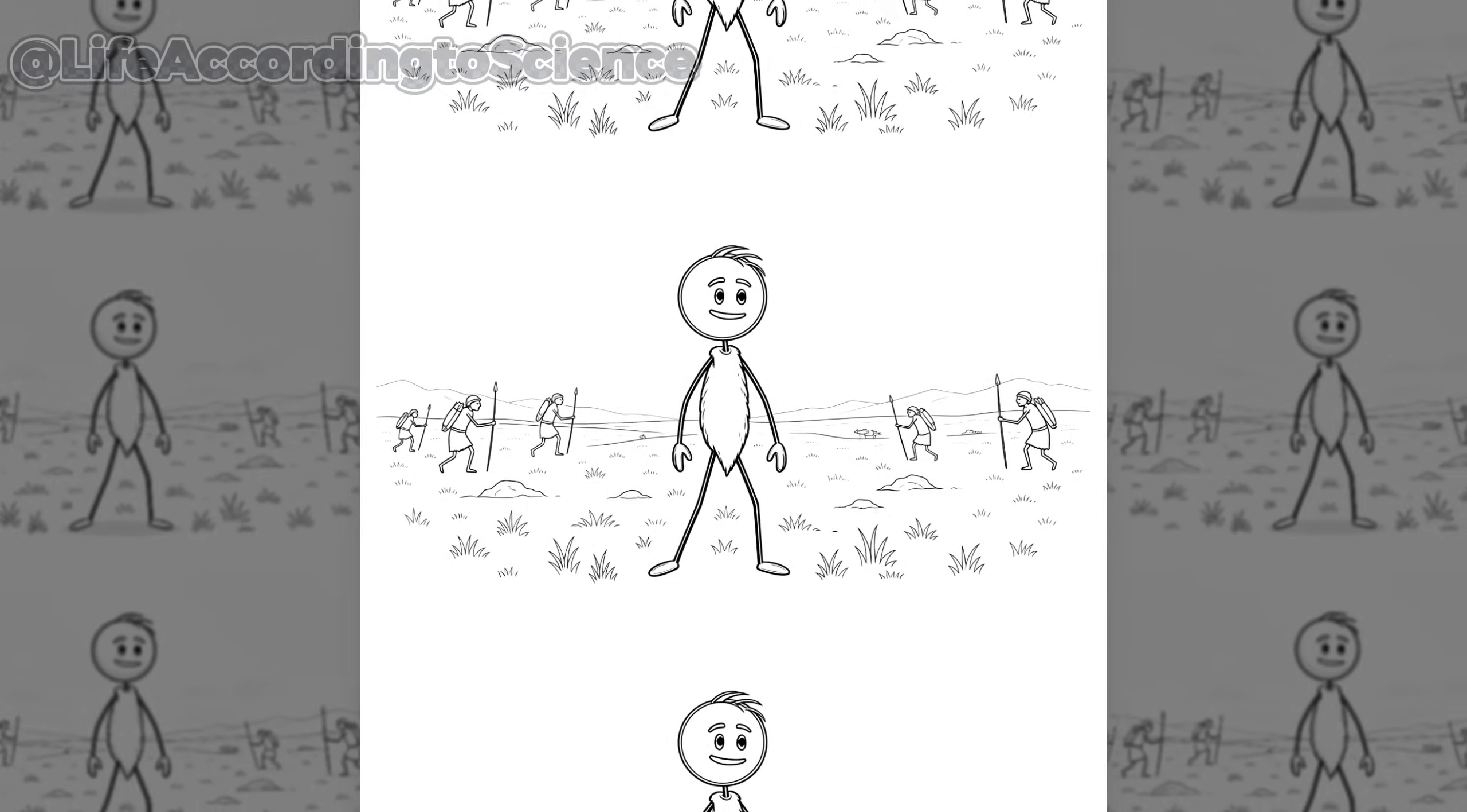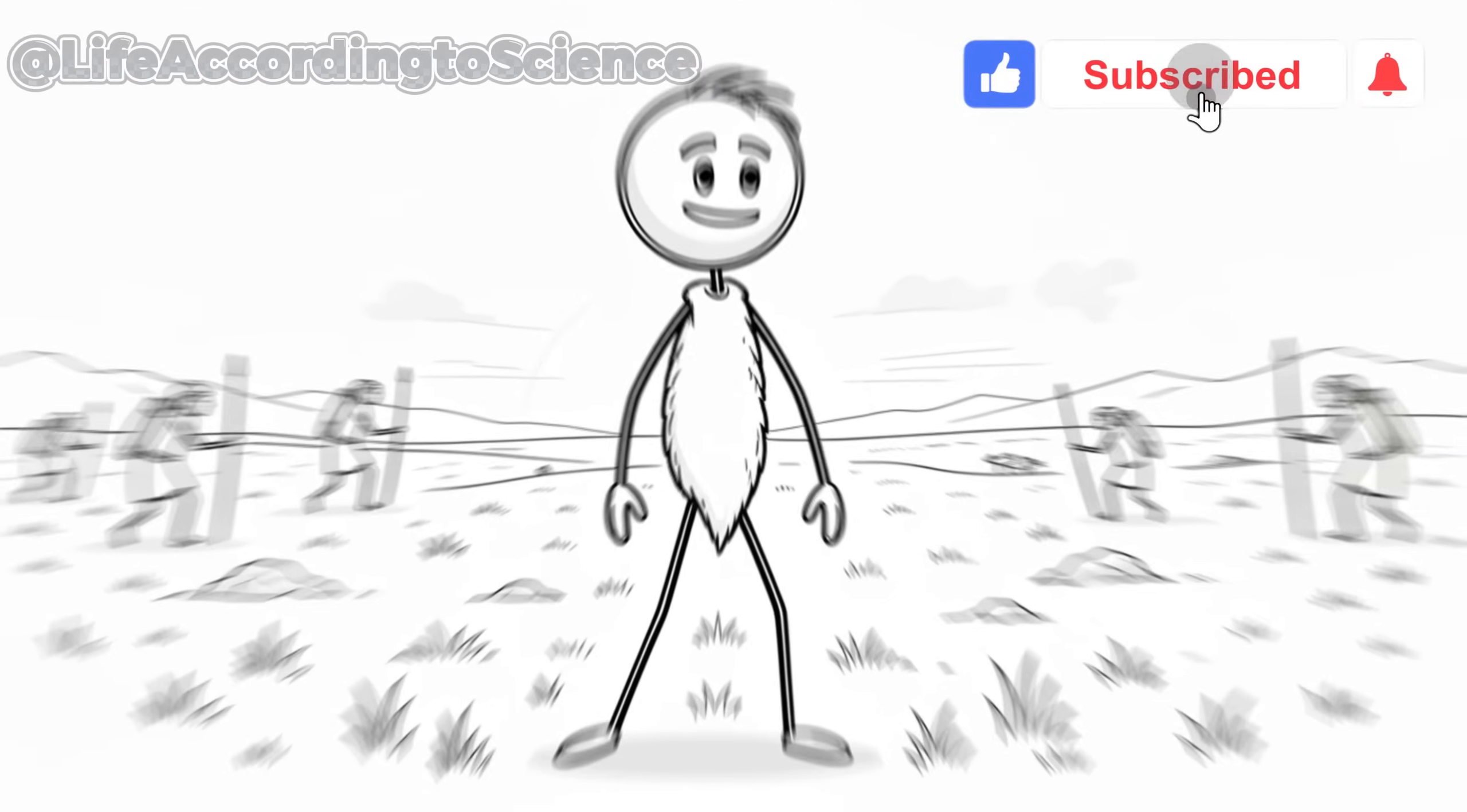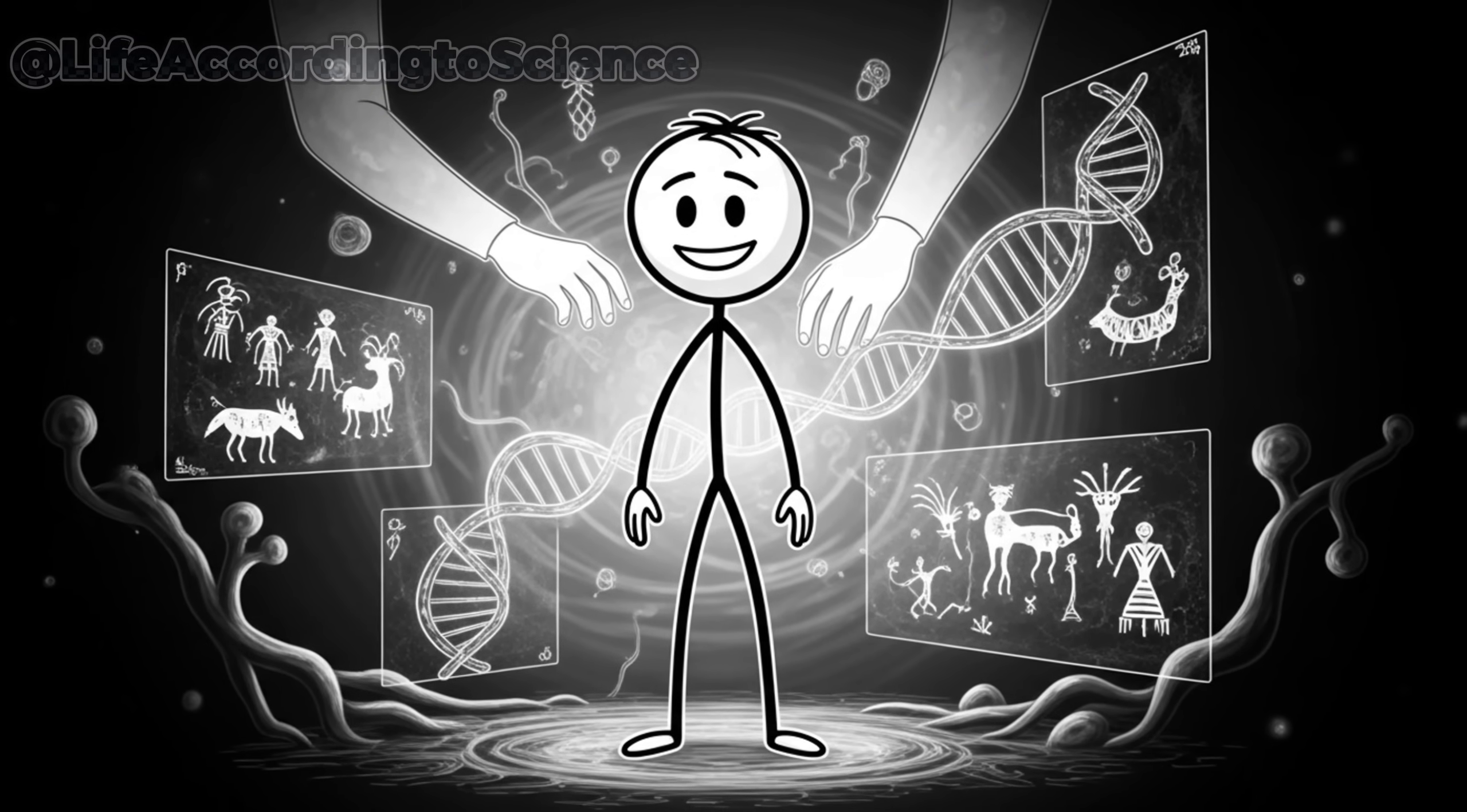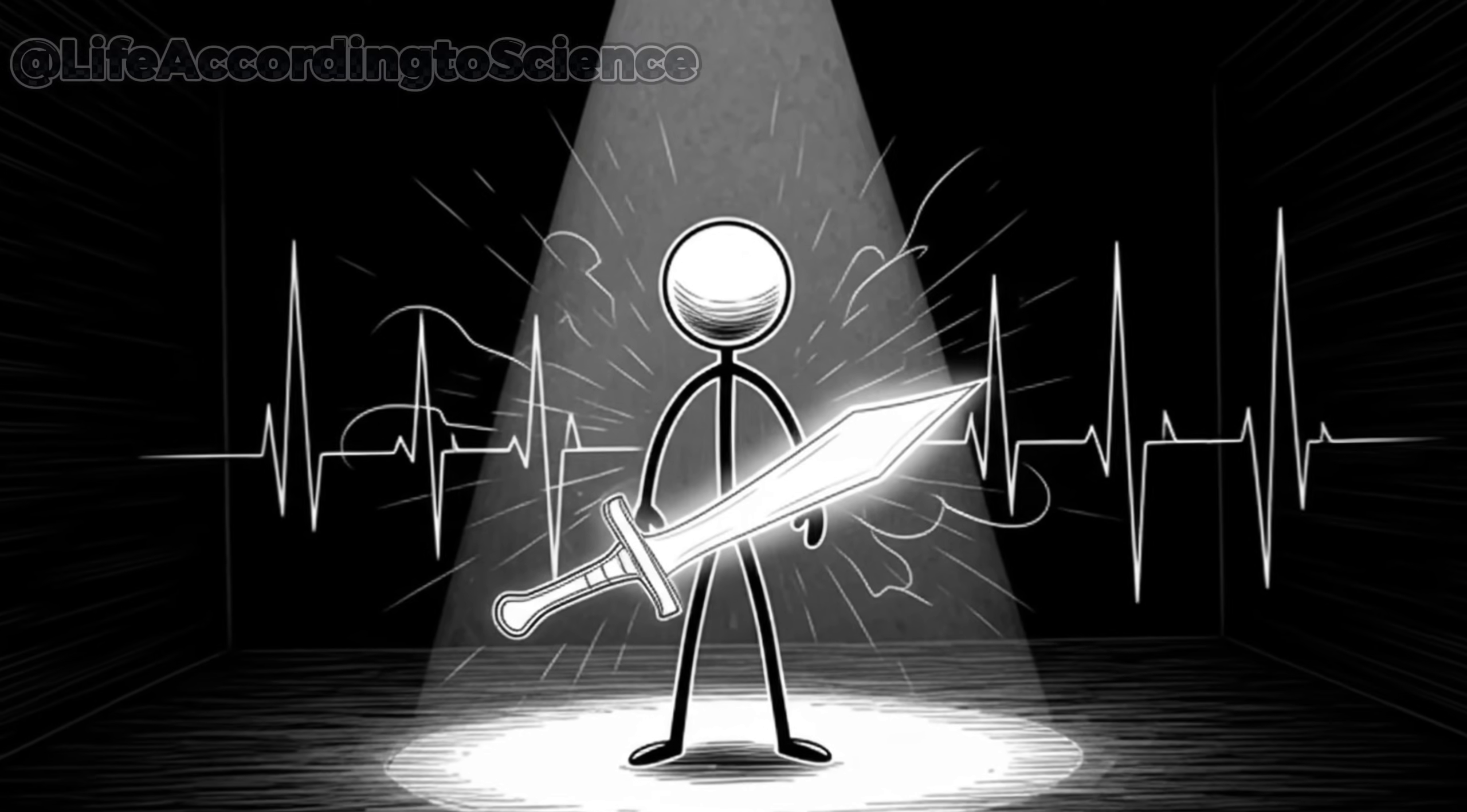So instead of shutting down, their brains switched into hunter mode: focused, alert, and creative. You're tapping into that same ancient intelligence. So next time you feel your stomach growl during a fast, remember, that's not weakness talking. That's your brain sharpening the blade.